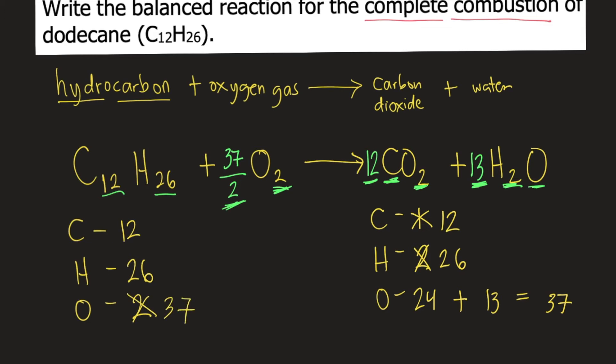Now, since all elements are balanced, technically, the reaction is already balanced. However, most professors do not prefer fractions as coefficients in balanced chemical reactions. Some professors prefer whole numbers. So how do we remove the fraction? We multiply the entire reaction, all the coefficients, by 2.